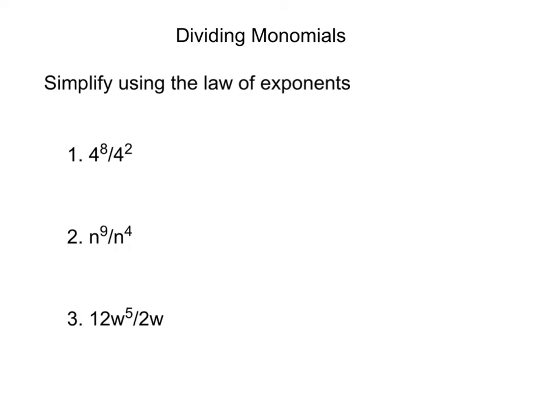Now we're looking at dividing monomials. This is another law of exponents. So 4 to the eighth divided by 4 to the second power. So what is 4 to the eighth power? Well that's 4 eight times divided by 4 to the second power, which would be two times.